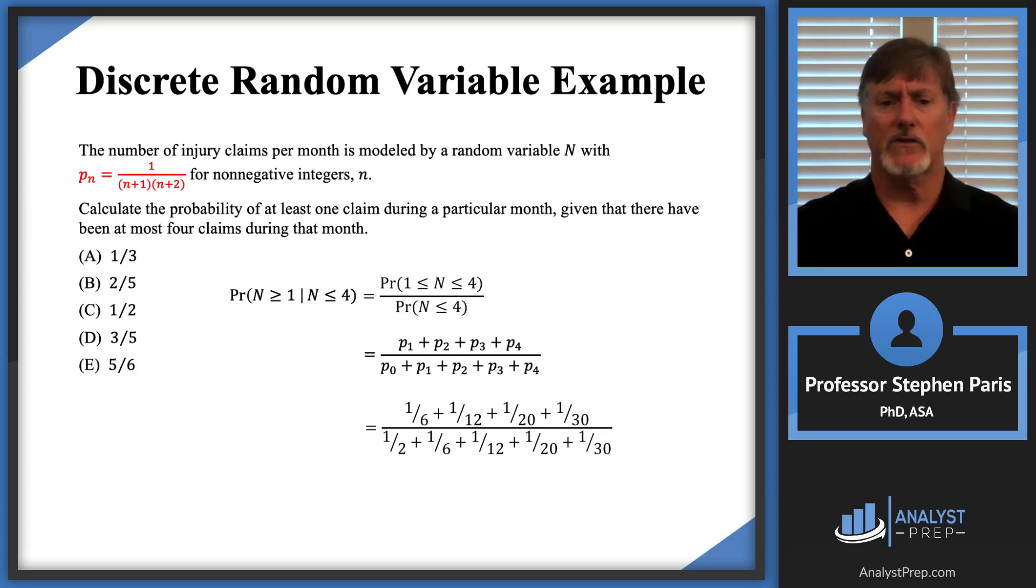At this point it's just arithmetic: add up the numerators and denominators. It looks like I got common denominators of 60 in both. I ended up with 20/60 in the numerator and 50/60 in the denominator. The 60s cancel, and I'm left with 2/5.